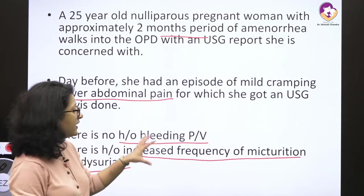The urinary complaints could account for her lower abdominal pain. Looking at the ultrasound report: the transvaginal sonography shows an intrauterine gestational sac, a fetal pole, and a yolk sac. The fetal pole has been measured at about 5 mm in size. However, there is no cardiac activity — this is what has made the woman worried. Whether you should be worried depends on confirming the period of gestation. Let's say she is 5 weeks pregnant.